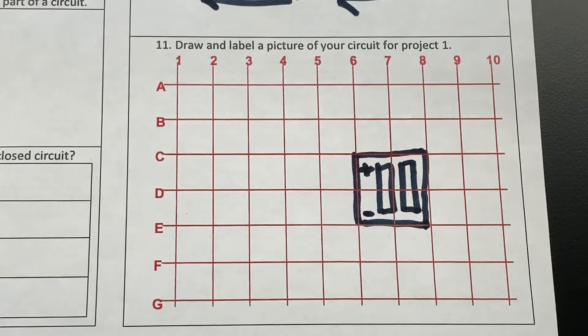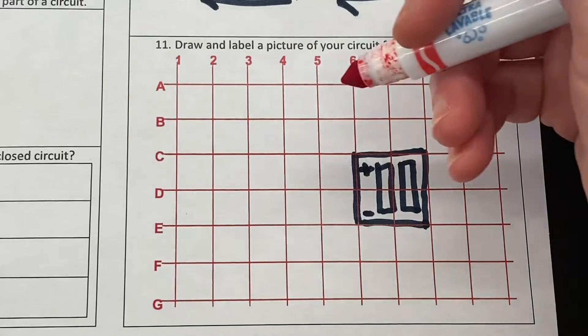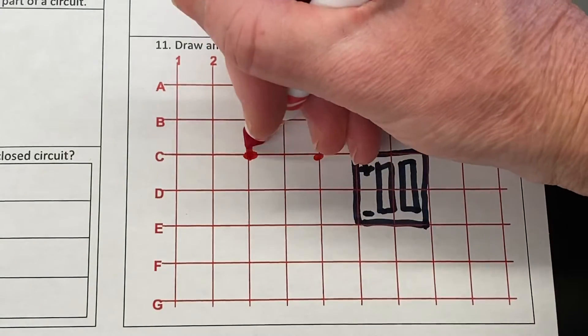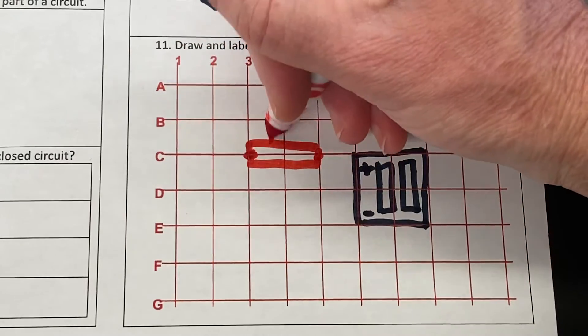That goes from c3 to c5, so I'm going to find c3 and I'm going to find c5. I'm going to draw that light there, and I'm going to show that there's a light on top of it.